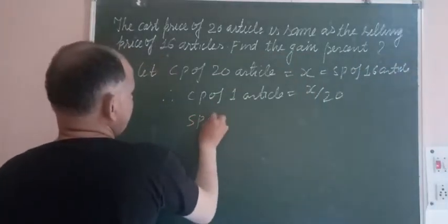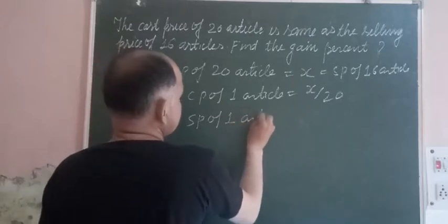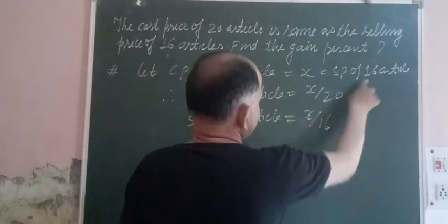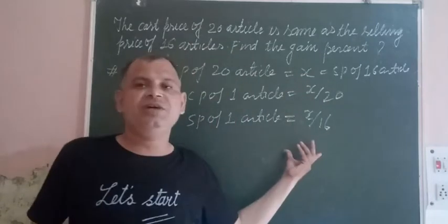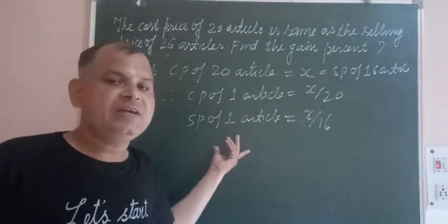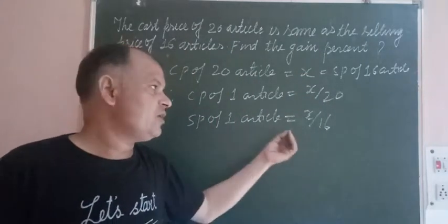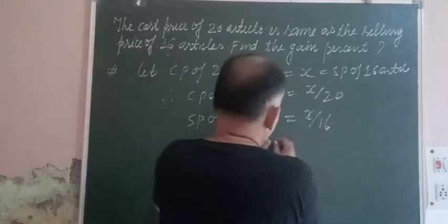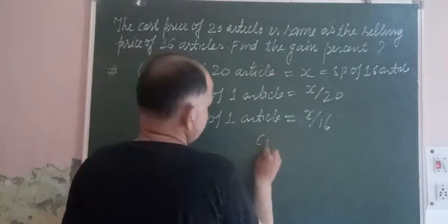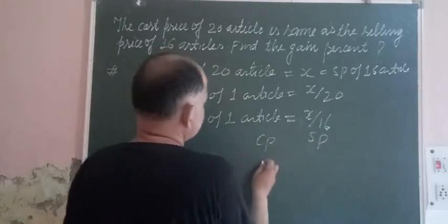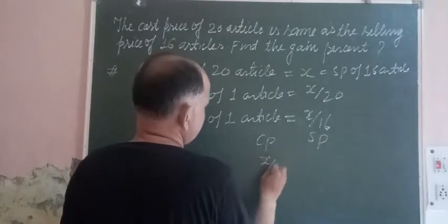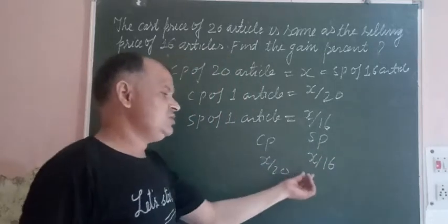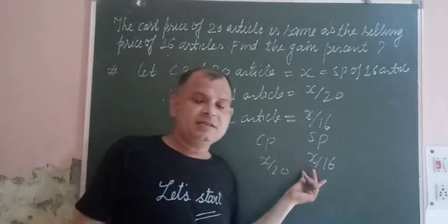From there you can find SP of one article: x divided by 16, so we get the selling price of one article as x upon 16. So we have CP = x upon 20 and SP = x upon 16.